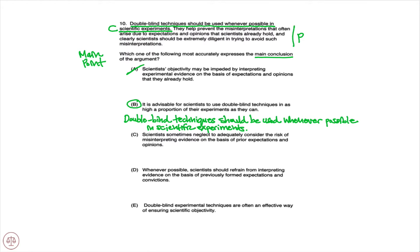So B would be the correct answer. But just making sure, checking C: scientists sometimes neglect to adequately consider the risk of misinterpreting evidence on the basis of prior expectations and opinions. That is not necessarily true and not mentioned in our passage, so clearly not the main point. C would be eliminated. Moving to D: whenever possible, scientists should refrain from interpreting evidence on the basis of previously formed expectations and convictions.